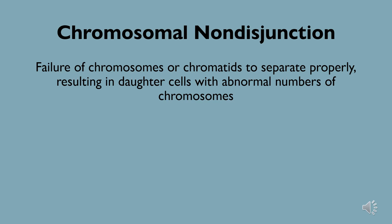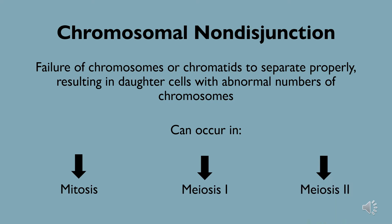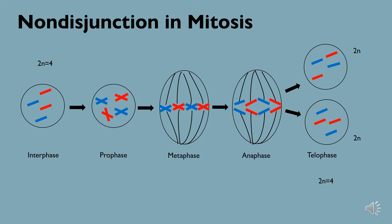Additionally, because anaphase is an essential step in mitosis, meiosis 1, and meiosis 2, nondisjunction events can afflict all three of these stages of cell division, with differing effects depending on where and in which process it takes place.